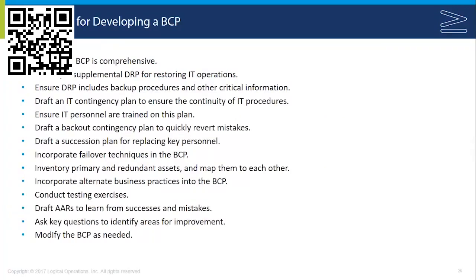The business continuity plan is very important and needs to be as comprehensive as possible. We also want supplemental disaster recovery plans for restoring IT operations should business continuity planning and high availability fail. The DRP should include backup procedures and other critical information. We also need a contingency plan to continue IT procedures in extreme disasters, with IT personnel and recovery teams trained on it. A succession plan is needed for replacing key personnel, and failover techniques should be incorporated into the BCP with adequate asset identification. Always do testing, always perform documentation, and ask questions about potential modifications to these plans.